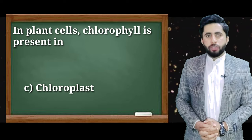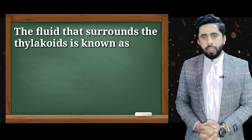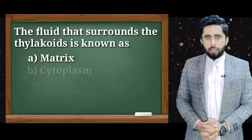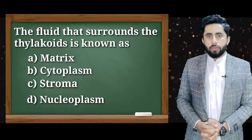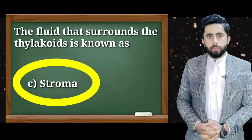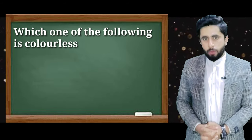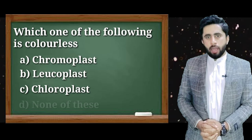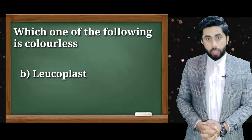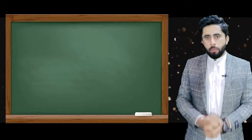MCQ 3: The fluid that surrounds the thylakoid is known as: matrix, cytoplasm, stroma, or nucleoplasm۔ درست جواب: stroma۔ MCQ 4: Which one of the following is colorless: chromoplast, leucoplast, chloroplast, or none of these۔ درست جواب: leucoplast۔